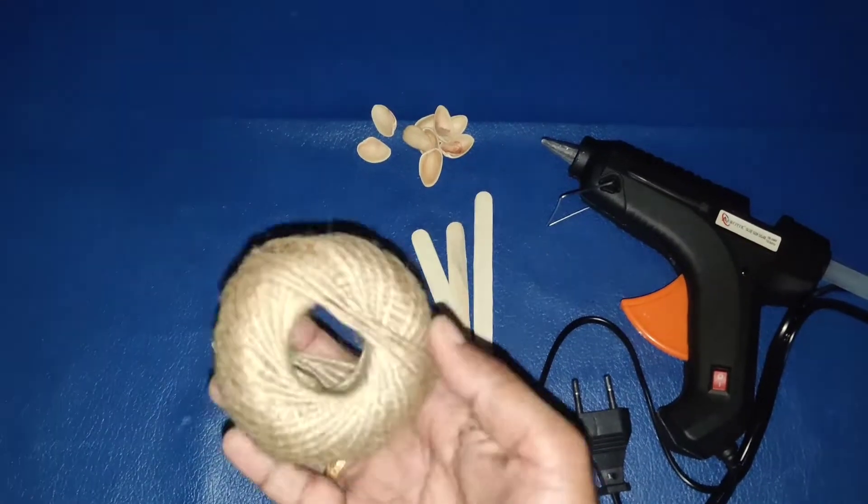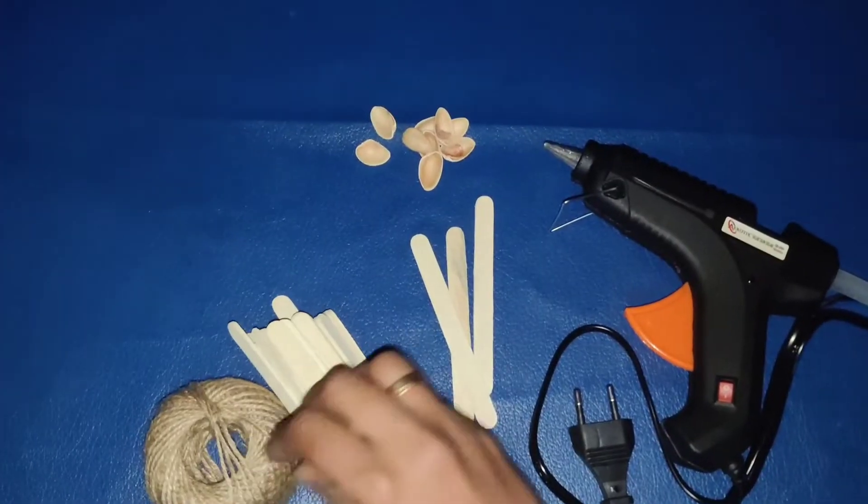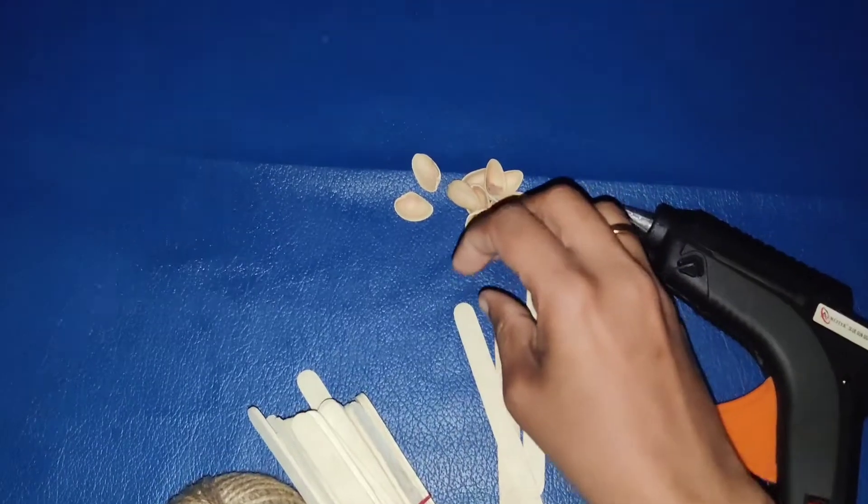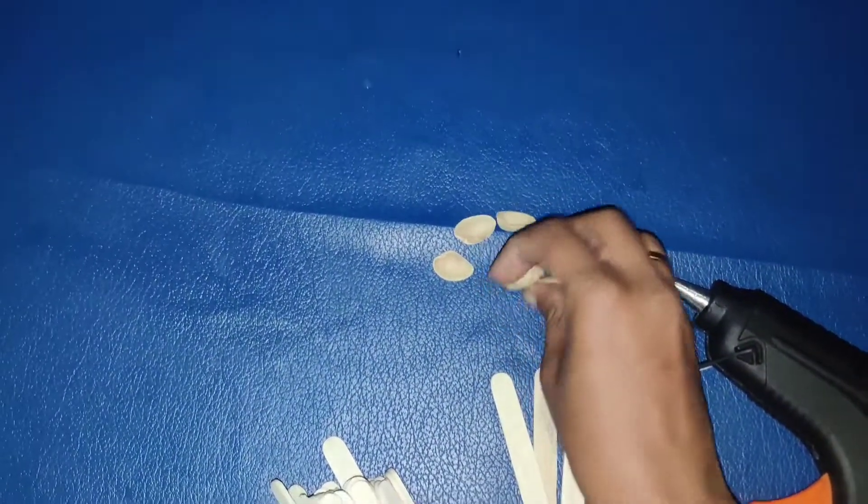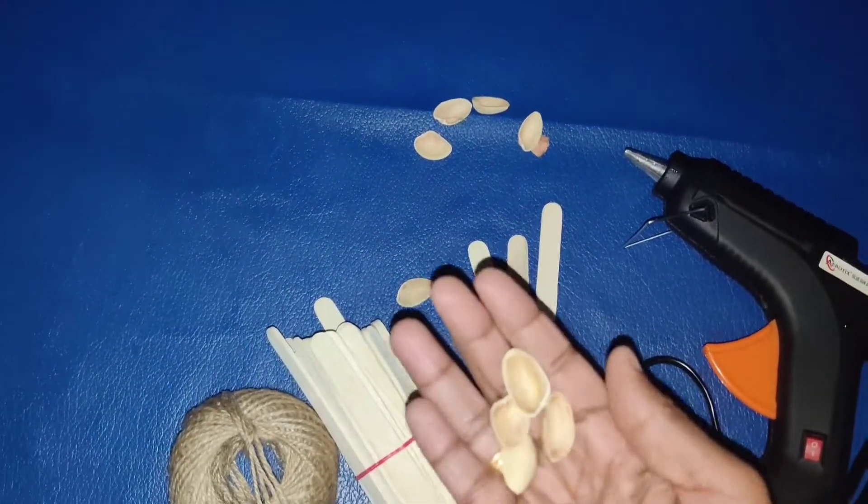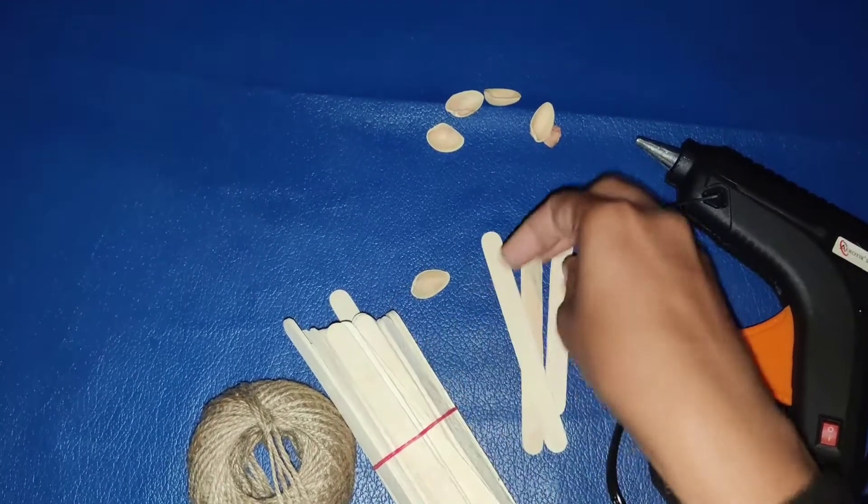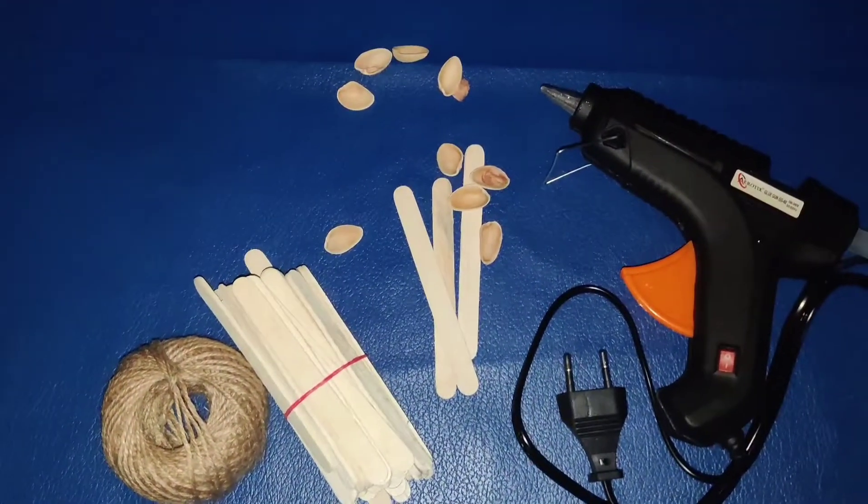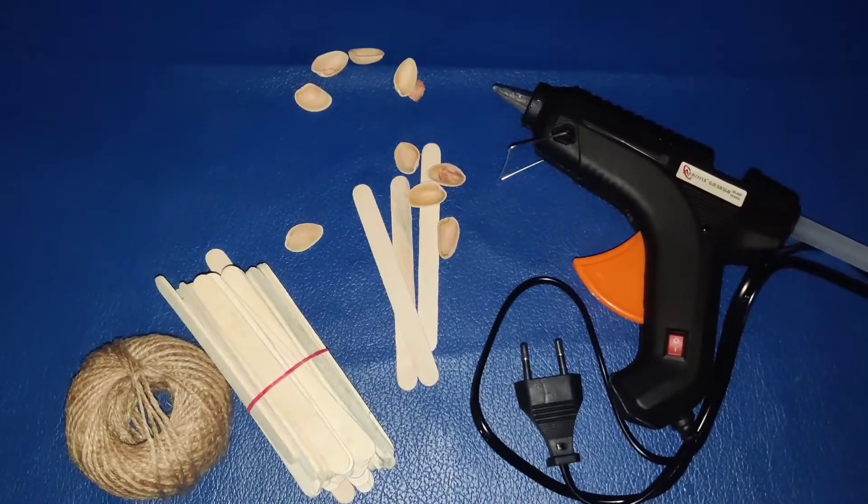It's a bunch of ice cream sticks, 40 to 45 of them. The main item is a big shell.